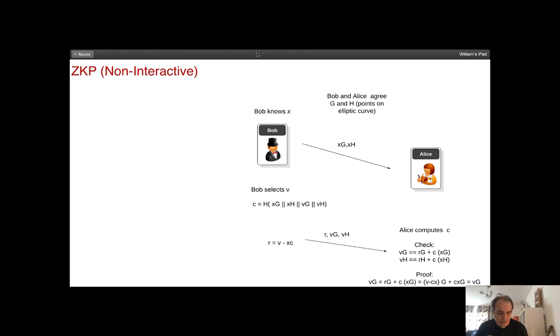Next we'll look at the non-interactive version. With this, again Bob sends over xg and xh, selects a random value, and then takes the challenge as the hash of v times g and h, v times h. He merges them together and then creates the hash. So the hash is this value here and we multiply it by the x value here and the v value to get r.